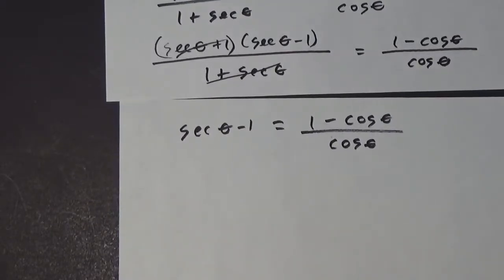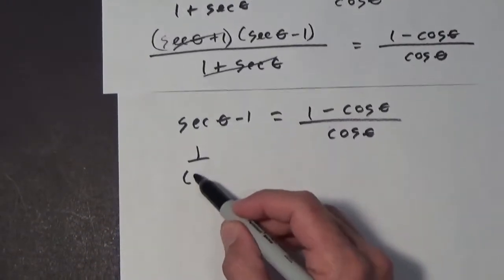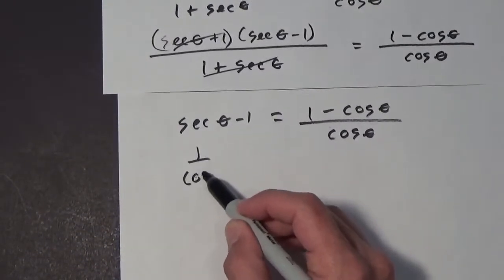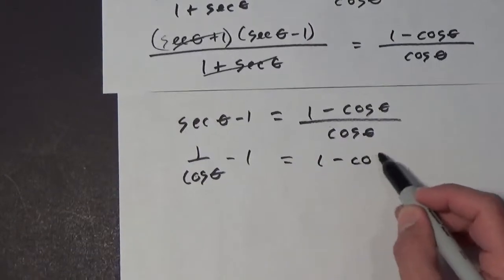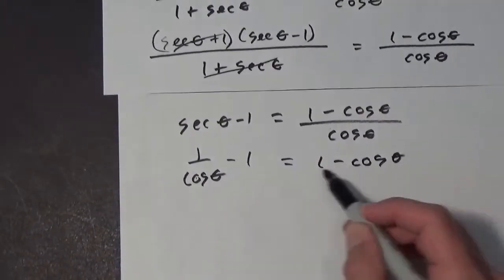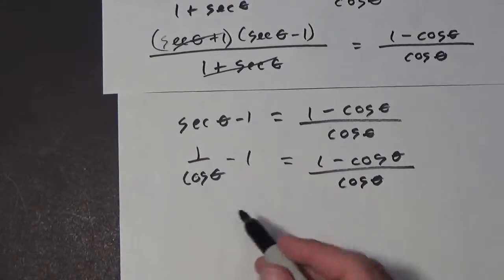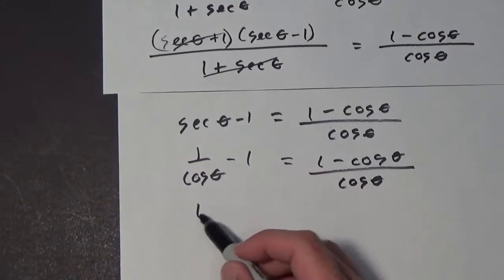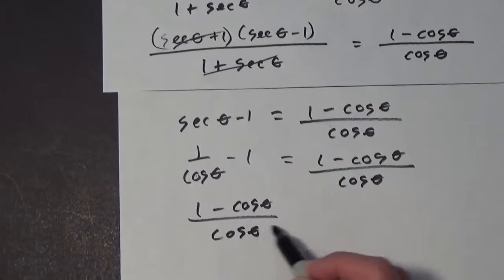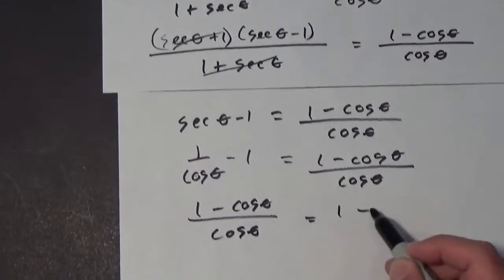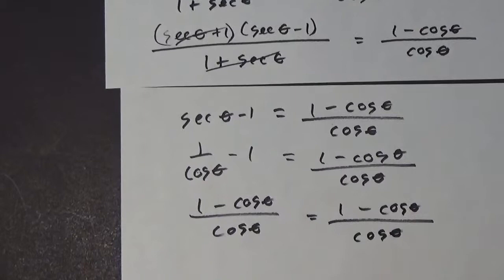The next thing we're going to do is take secant and turn it into 1 over cosine, and combine fractions. So we get 1 minus the cosine of theta all over the cosine of theta equals 1 minus the cosine of theta all over the cosine of theta. And there you go.